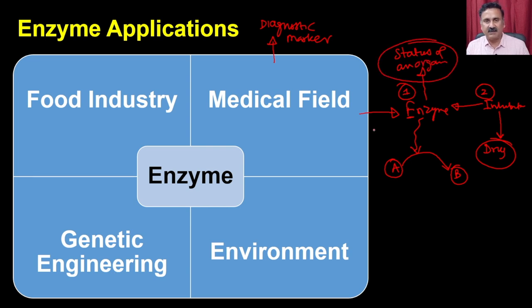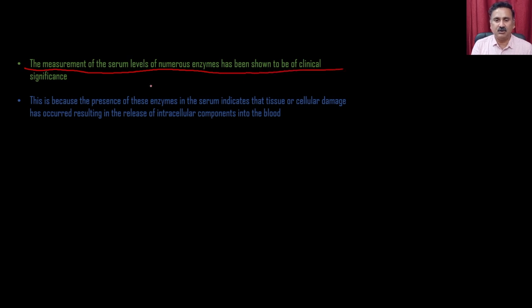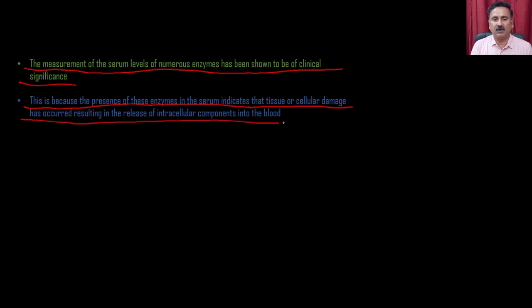The enzymes are present in the organs, so they can actually be able to give you the status of that particular organ's functioning. The measurement of the serum level of various numerous enzymes has been shown to be of clinical significance. This is because the presence of these enzymes in the serum indicates tissue or cellular damage that has occurred, resulting in the release of intracellular components into the blood.